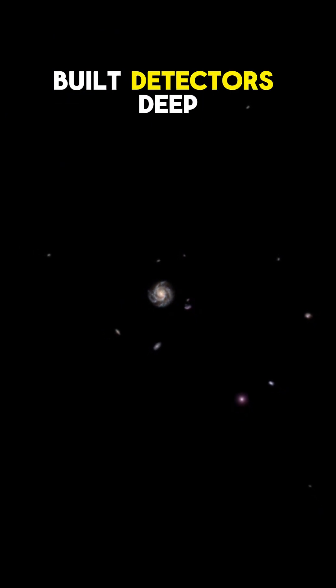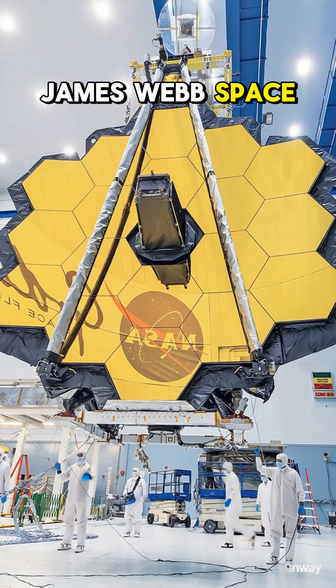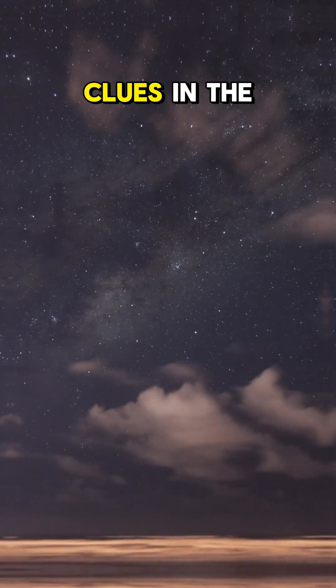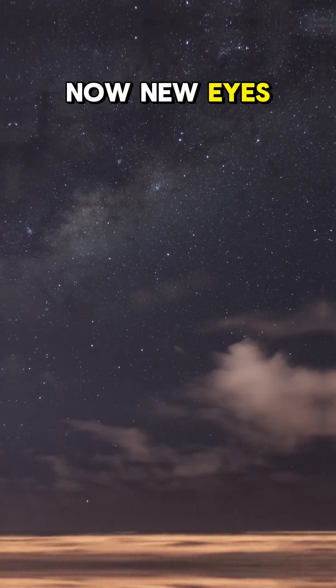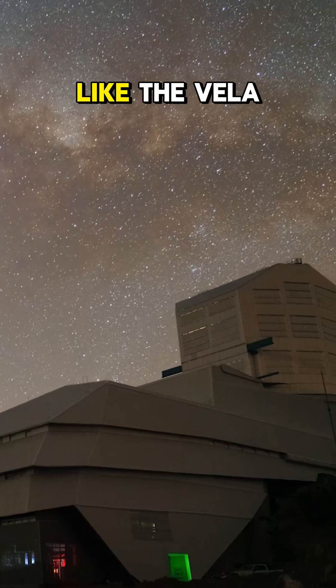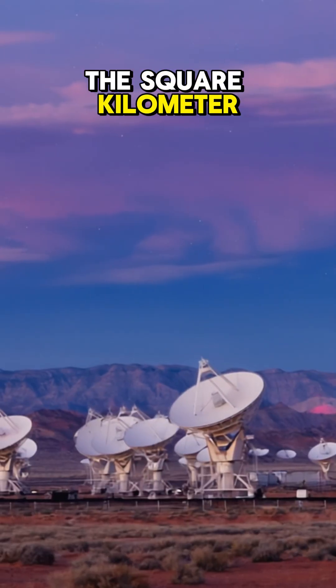That's why we've built detectors deep underground and launched the James Webb Space Telescope to hunt for clues in the cosmos. Now, new eyes are coming online, like the Vera C. Rubin Observatory and the Square Kilometer Array.